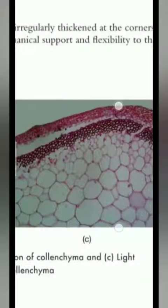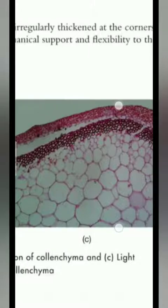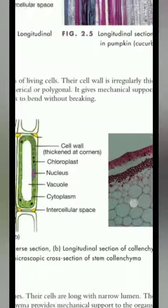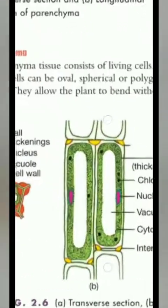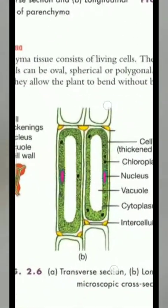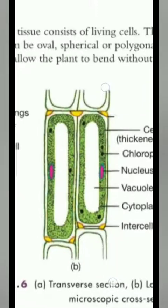Colenchyma is found in leaves, stems, and petioles of herbaceous dicot plants. It provides mechanical support to leaves and stems. The walls are thickened at the corners due to deposition of cellulose and pectin.